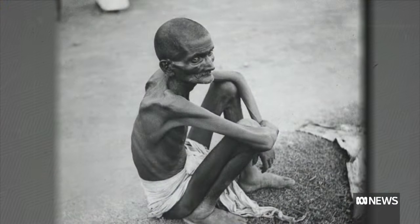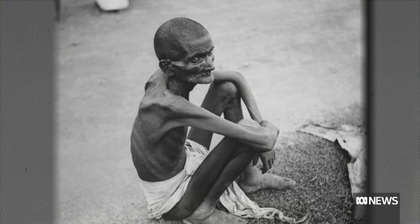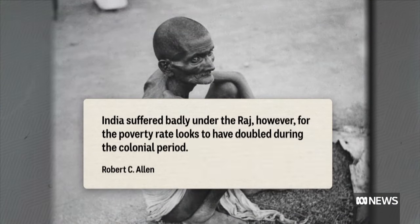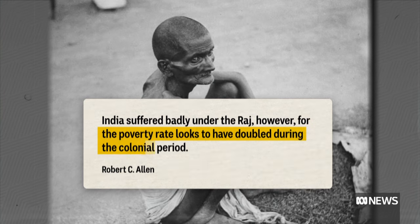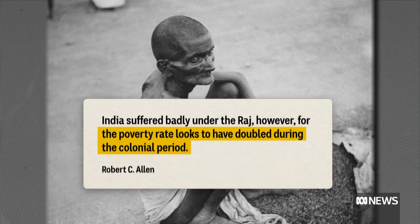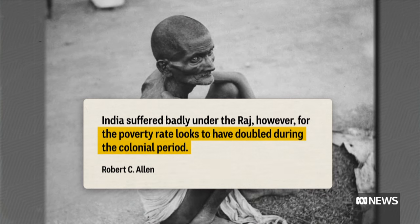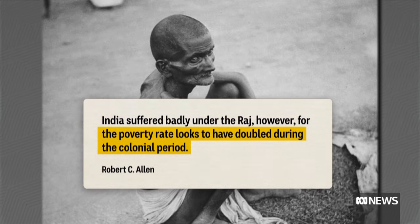Some say it might have been even 100 million. Recent analysis by economic historian Robert C. Allen suggests that extreme poverty in India more than doubled under the British, with real wages falling and famines increasing in frequency and severity. Some scholars say that during this period Indian life expectancy dropped to just 22 years — which is, when you think about it, unbelievable.